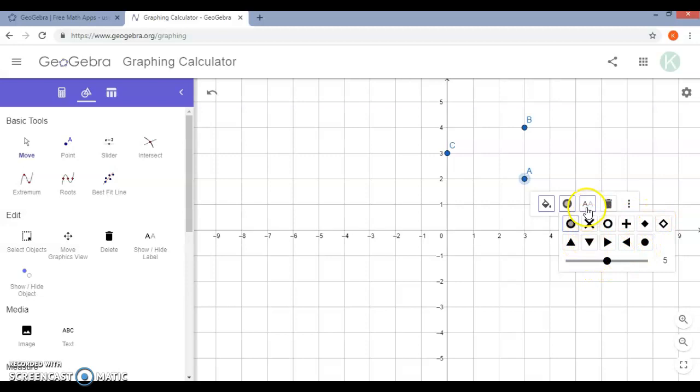You can change the thickness of it. You can also click under the letters and you can change the label, and you can select or deselect whether to have it showing the value. So for a point that would be the ordered pair. If you're showing the value of an angle that would be the degree measure. Those sorts of things. You also have an option to delete the object, and then if you click on the three dots you can go to some more advanced settings if you need them.